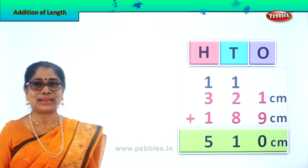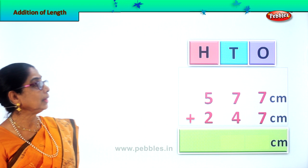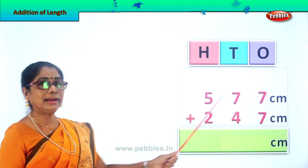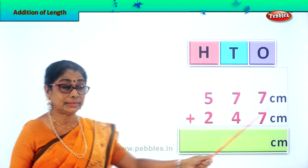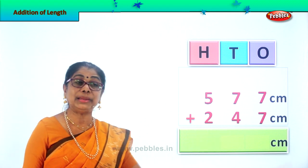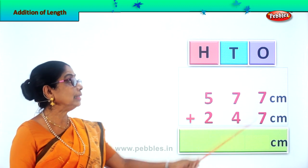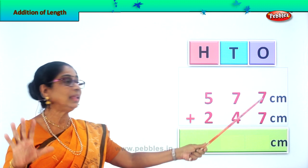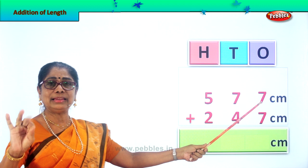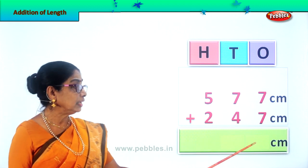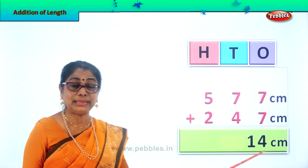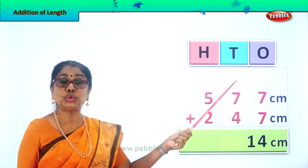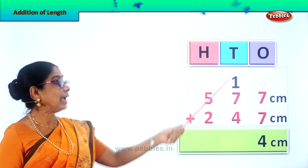Let's take another sum. 1's, 10's, 100's — numbers are arranged correctly. 577 centimeters plus 247 centimeters — what do we get? Let's add what's in the 1's place. 7 plus 7 is 14. We leave the 4 in the 1's place and take the 1 ten up to the 10's place.